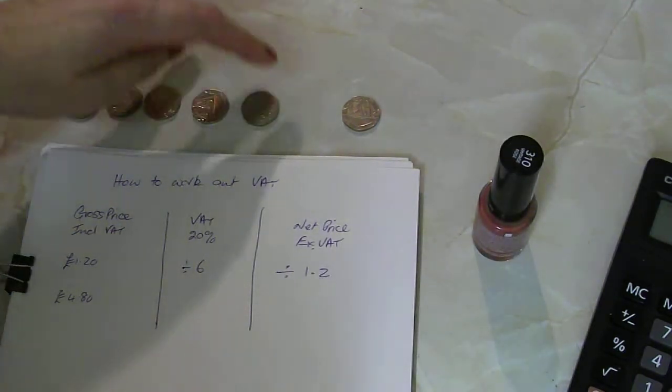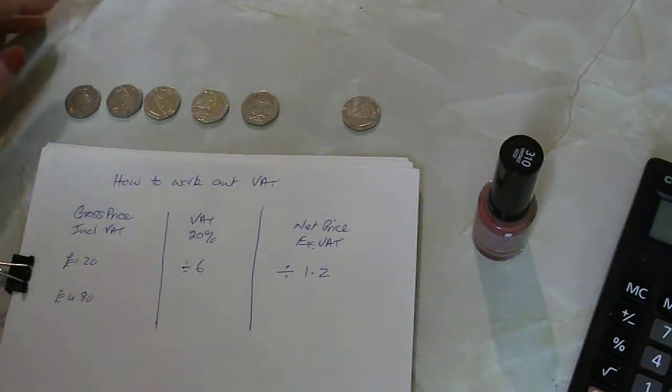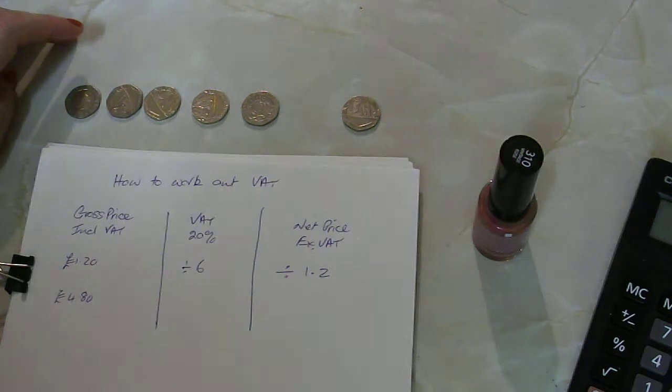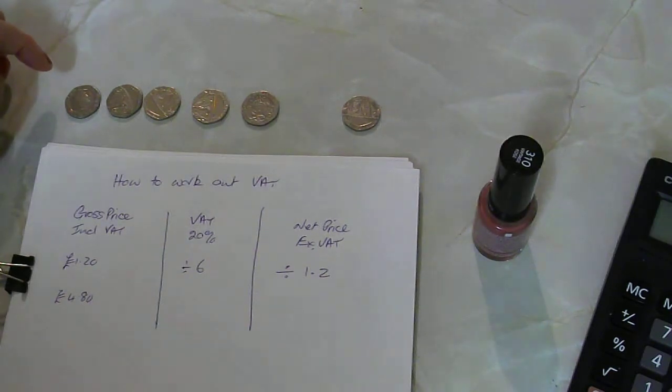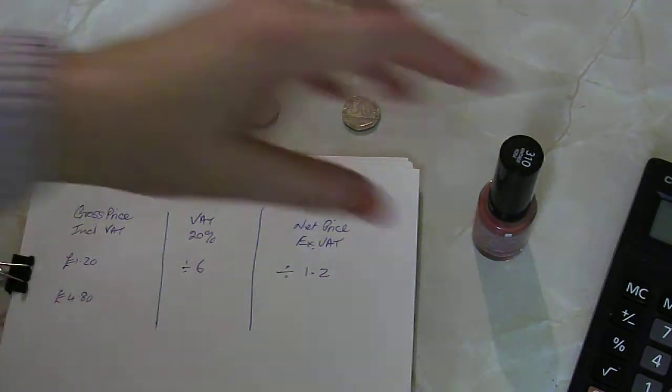Now the easiest way to explain it is when you buy something in the UK that has got 20% VAT added, you're actually paying 120% for the price of something.